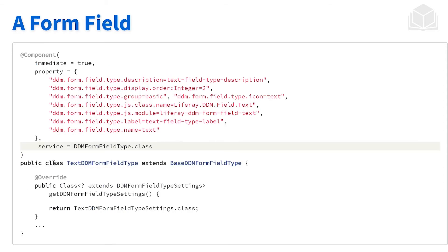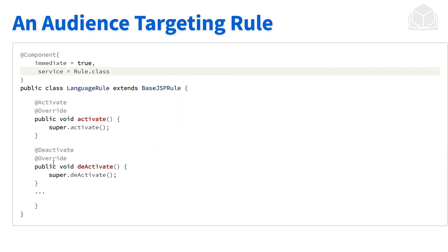Let's take another look. Here we have a form field. We have the component annotation at the very top, a number of properties that are defined, and again we'll see 'service equals'. If we follow that base DDM form field type, we'll then see that the interface being implemented will be the DDM form field type. And one more example — when we're looking at rules in the audience targeting world, it's kind of the same story. You can do a little digging, find those classes, and then see what that interface is at the end.